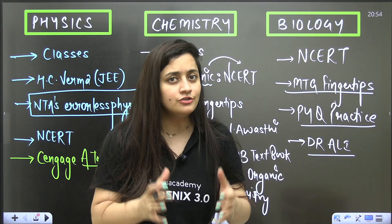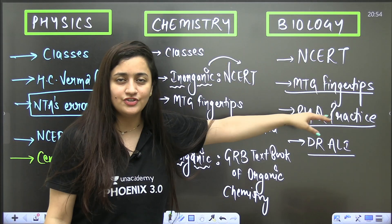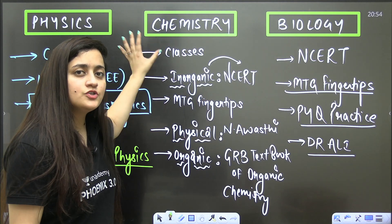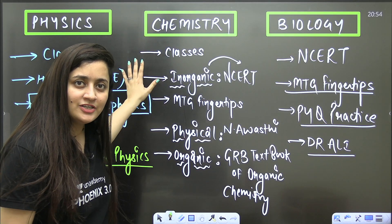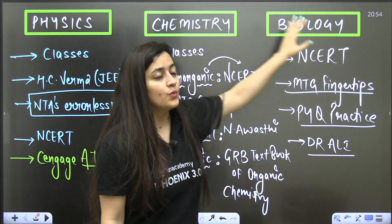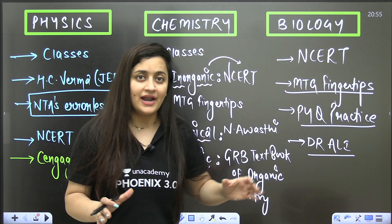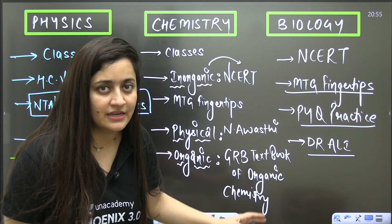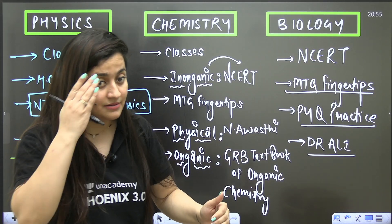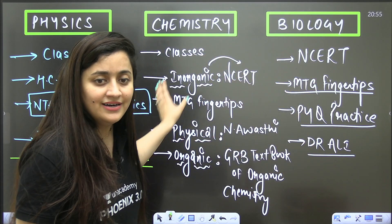To start with, you know that in our NEET examination physics, chemistry, and biology these three are going to come. From physics you have to attempt 45 questions out of 50, for chemistry 45 questions out of 50, and when it comes to biology you have to attempt 90 questions out of 100. So biology is making 50% of the syllabus and it is very easy to score marks in biology, but yes you have to decode the NCERT and you need to practice the questions.